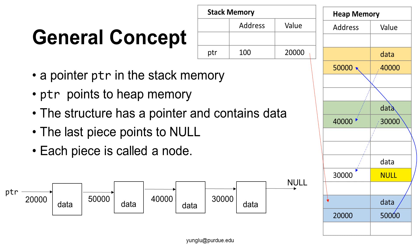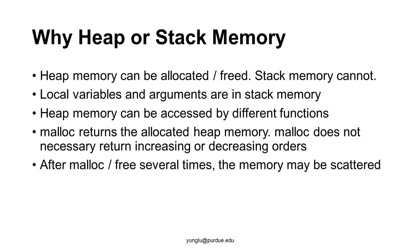Each piece of memory is called a node. Here are some frequently asked questions about dynamic structures. First, why do we use heap memory? Heap memory can be allocated when more memory is needed, and when it is no longer needed, it can be freed. Stack memory does not have this property. We will need local variables or arguments to store the address of the first piece of memory in the linked list. Another advantage of heap memory is that it can be accessed by different functions.